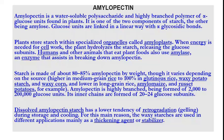Amylopectin is highly branched, being formed of 2,000 to 200,000 glucose units. Its inner chains are formed of 20 to 24 glucose subunits. Dissolved amylopectin starch has a lower tendency of retrogradation — that is, gelling during storage and cooling. For this reason, waxy starches are used in different applications, mainly as a thickening agent or stabilizer.